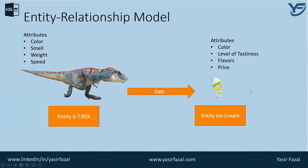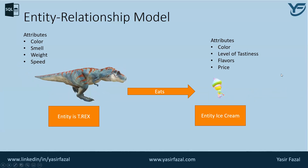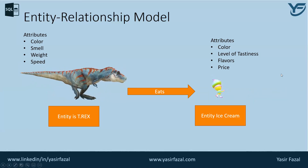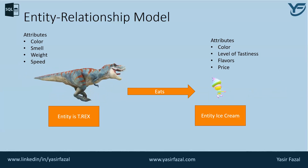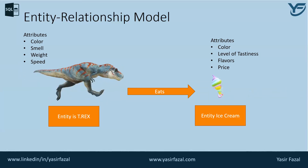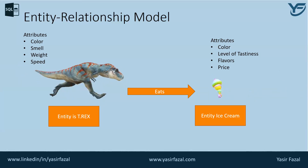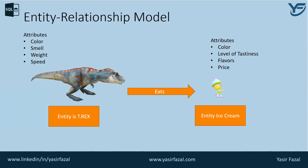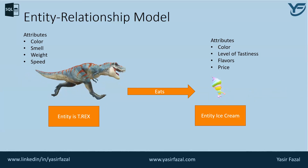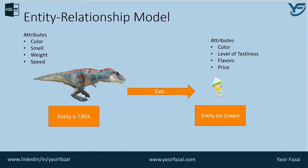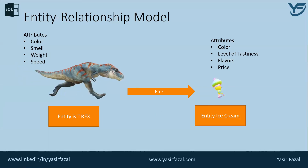There are a few things to understand from the diagram. An entity in an ER model is a real-world entity having properties called attributes, and every attribute is defined by a set of values called domain.